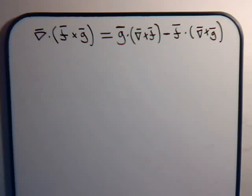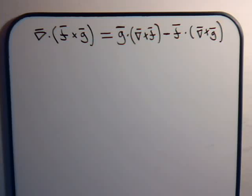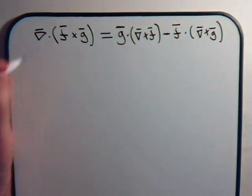Let's prove this vector identity that we have written across the top here. This will serve as example three of a vector identity problem that involves the del operator. Now if you haven't watched examples one and two, how we're going to proceed to prove this identity might not make very much sense to you. What we're going to do, as we did in those previous videos, is we're going to rewrite this like this.